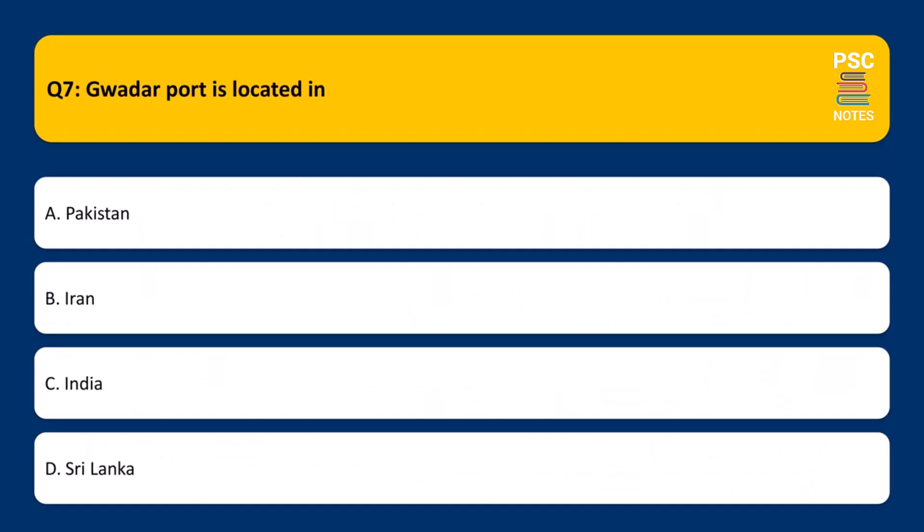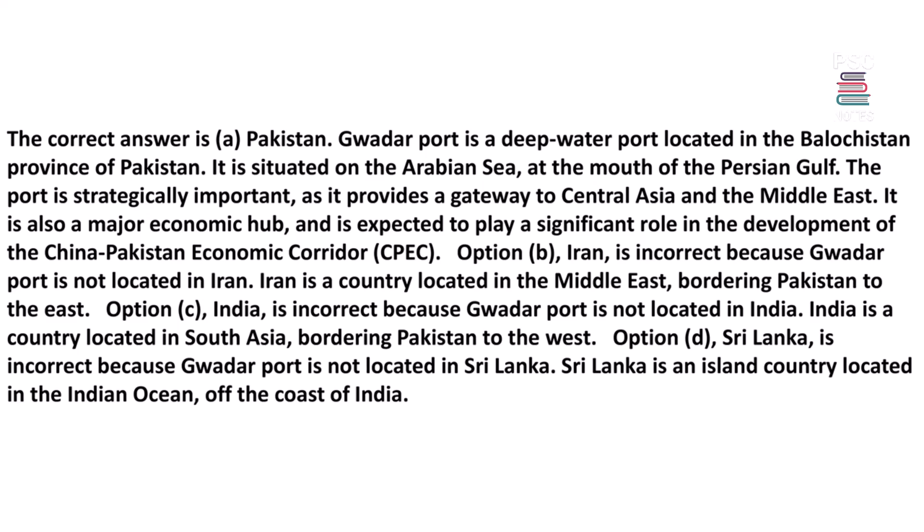Gwadar port is located in: A. Pakistan. B. Iran. C. India. D. Sri Lanka. The correct answer is A. Pakistan. Gwadar port is a deep water port located in the Balochistan province of Pakistan, situated on the Arabian Sea at the mouth of the Persian Gulf. It is strategically important as it provides a gateway to Central Asia and the Middle East, and is expected to play a significant role in the development of the China-Pakistan Economic Corridor.